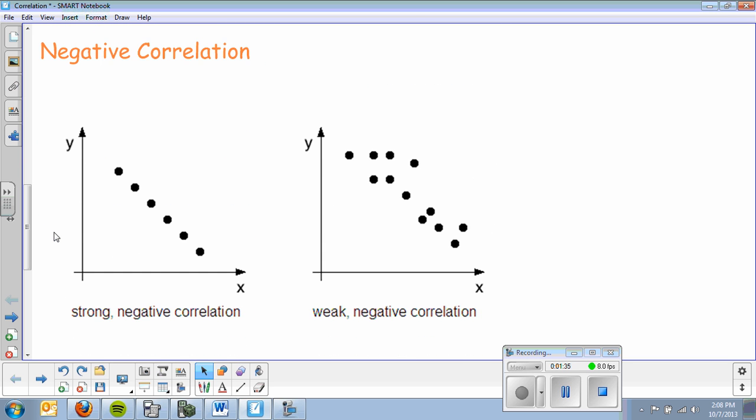Negative correlation - this doesn't mean it's bad. It's still strong, but the data is going down. As x is increasing, the explanatory variable is increasing, y, the response variable, is decreasing. As my rope becomes a little bit more frayed, a little bit more spread out, it weakens, and I have a weaker negative correlation here.